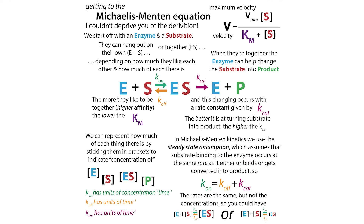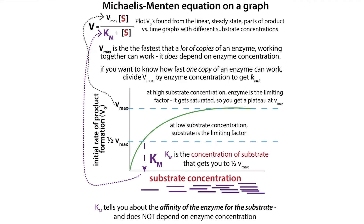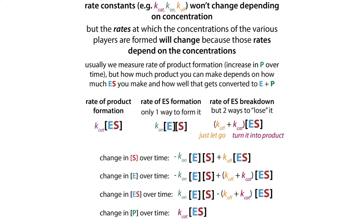The steady state assumption is kind of like equilibrium thermodynamics — we say that the rate of binding equals the rate of unbinding, not the rate constants, but the rates. Similarly, with the steady state assumption in the Michaelis-Menten equation, we're saying that the rate of substrate binding to the enzyme is the same as the rate it either unbinds or gets converted into products. We make these conditions where the steady state assumption is fairly reasonable — measuring early on, with plenty of substrate, without enough product building up to cause weird effects.